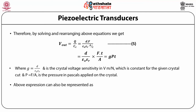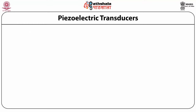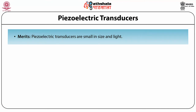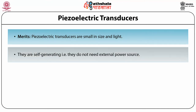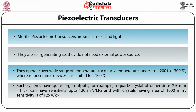The above expressions can also be represented as g = (V_out / t) / p = electric field / stress applied to the crystal (Equation 6). Merits: Piezoelectric transducers are small in size and light. They are self-generating, that is they do not need an external power source. They operate over a wide range of temperature — for quartz, the temperature range is from −200 to +300 degrees centigrade, whereas for ceramic devices it is limited to +100 degrees centigrade.